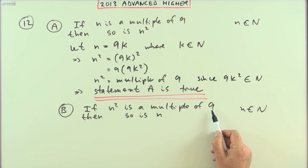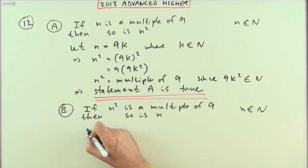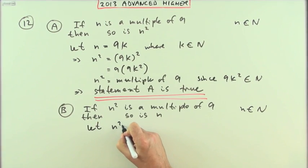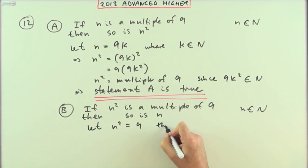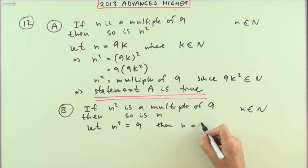9 is a square, and obviously a multiple of 9. Its square root, 3 isn't, so that would do. Or you could go for 36. So I'll just say here, let n squared equal 9, then n equals 3.